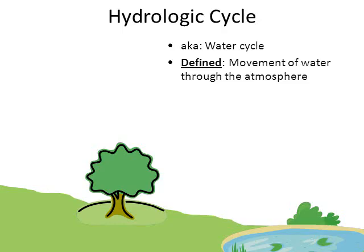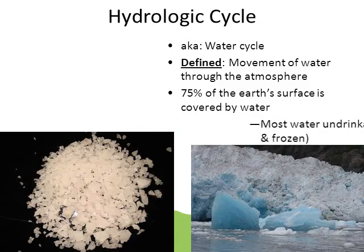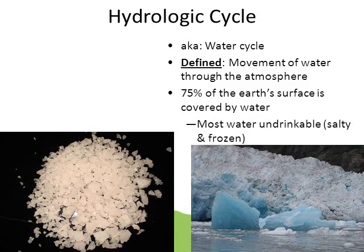In this cycle, it's simply the movement of water through the atmosphere. When you look at a picture of the globe, about 75% of Earth's surface is covered with water. But there's a problem — most of the water on Earth is undrinkable. It's either too salty because it's ocean water, or it's frozen like in glaciers and icebergs. So we really need to understand how the water cycle works so we can take care of the water we need to survive.